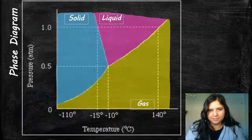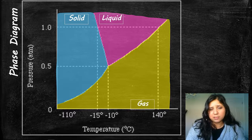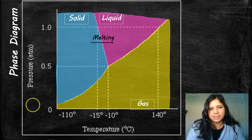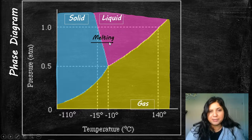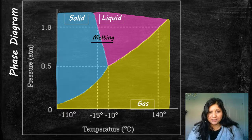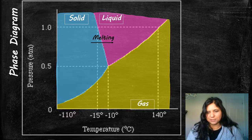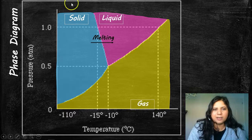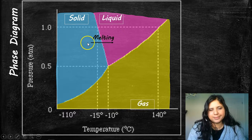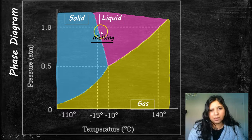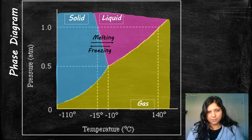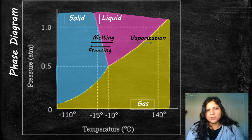Points along the curves are points of interest. Anywhere on a line, you get two phases coexisting in equilibrium. On the solid-liquid curve, liquid is freezing into solid and solid is melting into liquid — you have ice molecules and water molecules simultaneously freezing and melting. Going from lower to higher temperatures across this barrier is melting; going the opposite direction — from higher to lower temperatures — is freezing.